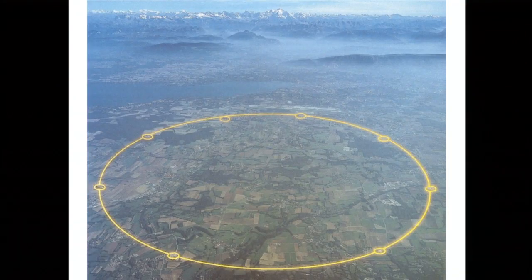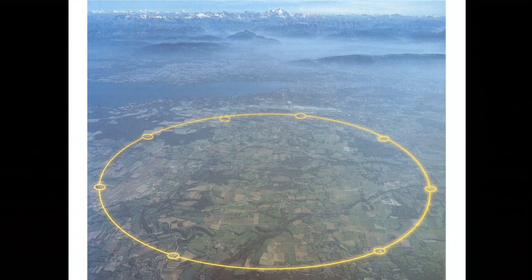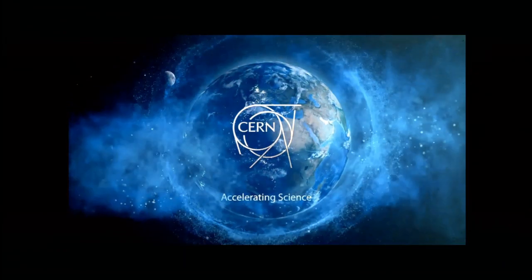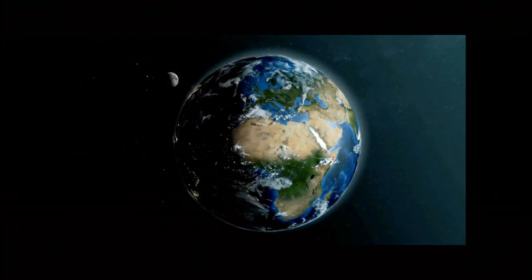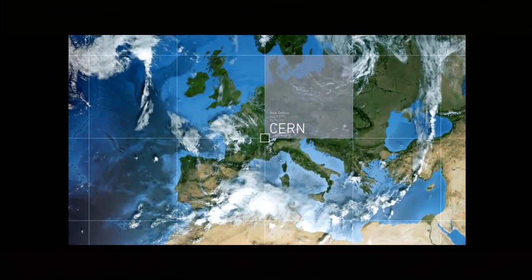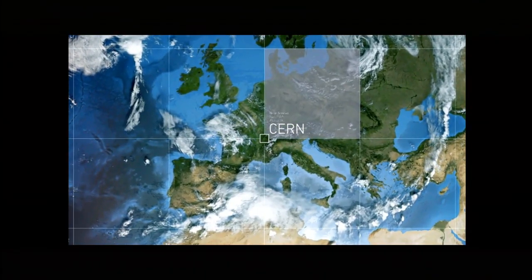Here's a picture of the LHC ring — just to give you a sense of size, there's Geneva and Lake Geneva in the background. 27 kilometers is pretty big. I want to show you a short video from CERN about the operation of the LHC, which gives a sense of how things run.